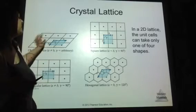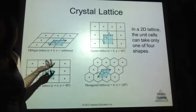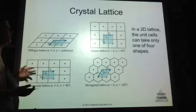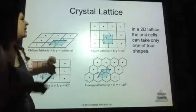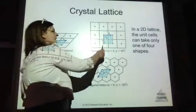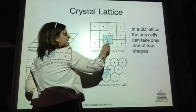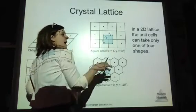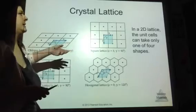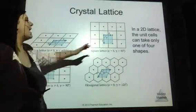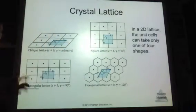The oblique lattice is the most common — think of it as acting like a parallelogram. A square lattice is my second type. If A and B are equal in length and gamma is 90 degrees, then I would consider it to be a square lattice, so A and B must be perpendicular to one another.